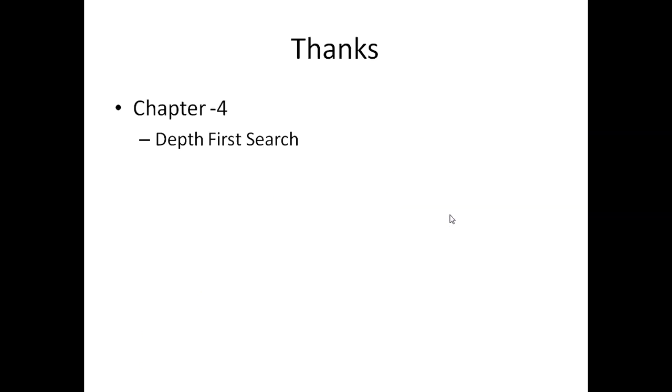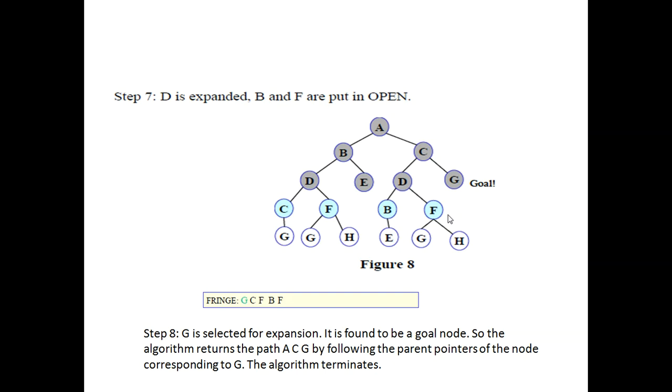This was basically about Breadth-First Search. What we do in Breadth-First Search - let me celebrate once more - we start with the root node, then move towards the breadth portion. That means A, then B and C, then D and E, then D and G. We pick the root node, pick its successors, and add the successors of the current node towards the right direction.